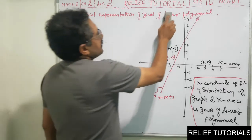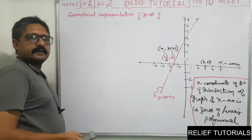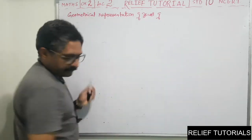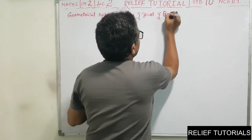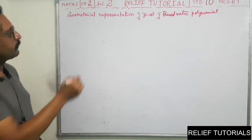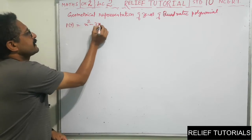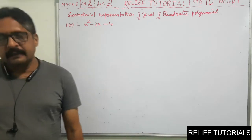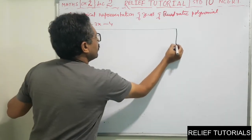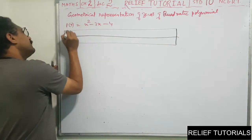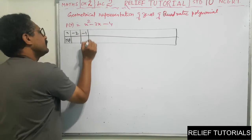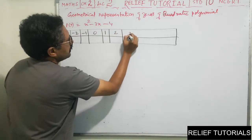Now we discuss the geometrical representation of zeros of a quadratic polynomial. We take P of X equals X squared minus 3X minus 4 and set up a table of X values: minus 2, minus 1, 0, 1, 2, 3, 4, 5.